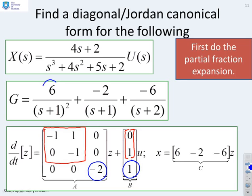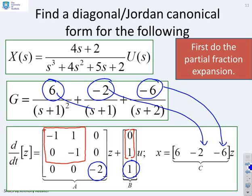It's got the 0, 1 block to go with the Jordan form and the 1 to go with the simple diagonal form. And finally, if we look at the residues, the 6, the minus 2 and the minus 6, you'll find that they have mapped across to the C matrix exactly as you expected. So, the residues for the non-simple Jordan form come in the first block and the residue for the minus 2 is in the last block.